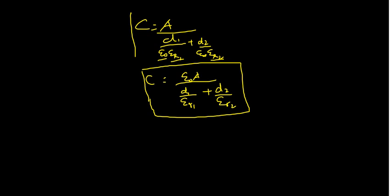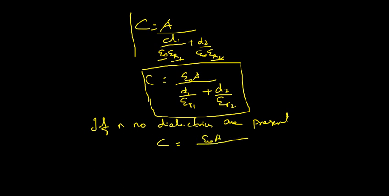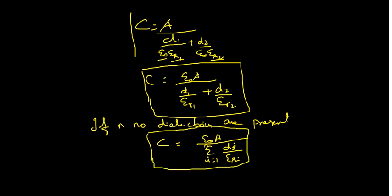If N number of dielectrics are present, we have taken two dielectrics 1 and 2, but if more dielectrics are present, the equation can be written as C is equal to epsilon0 times A divided by the summation from i equals 1 to N of Di divided by epsilonRi. This is the general form of the expression — whatever the number of dielectrics present in between, we can find the capacitance using this formula.